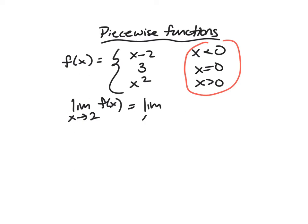it's really going to be just the limit as X approaches 2 of x². We know that's a nice continuous function. We can just plug it in, and it's 4.